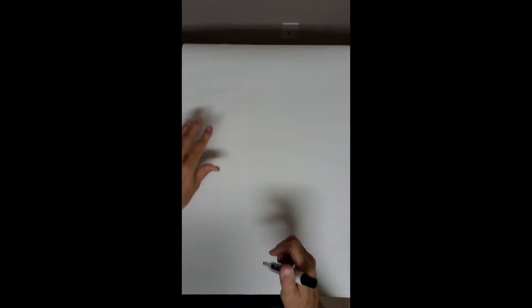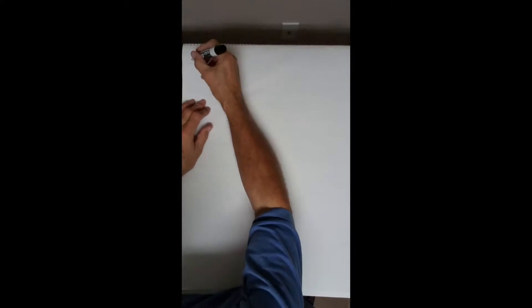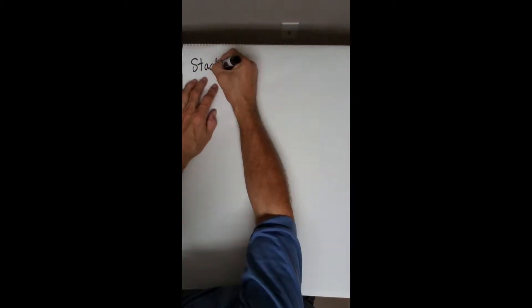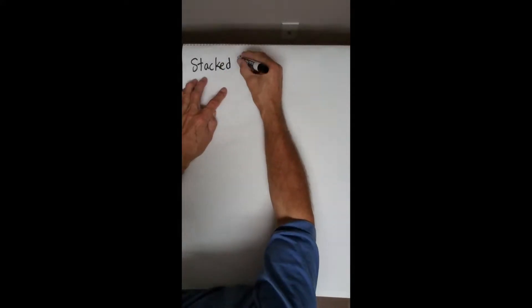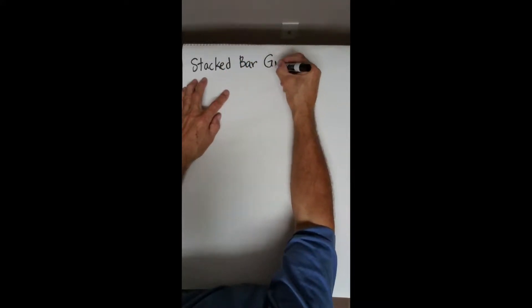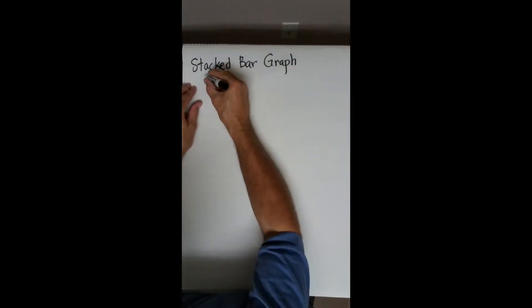This next graph we're going to draw or learn about is something called a stacked bar graph. A stacked bar graph is also used for bivariate data.